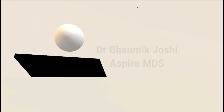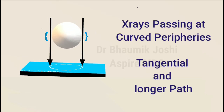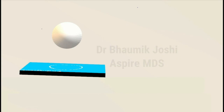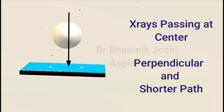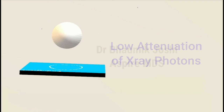Similarly, when x-rays are passing through the curved peripheries, they also have a long and tangential path, and for the same reason they have more attenuation before reaching the radiographic film. But when we see the x-rays passing at the center, as marked by the red arrow, we only need to consider the x-rays passing through the surface. Here they are passing perpendicular to the object, and hence they have a shorter path to cross through and reach the film. So the attenuation of x-rays will be less here.